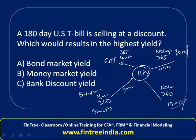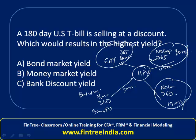We can clearly see that the highest yield is the effective annual yield because it uses compounding. The second highest is bond market yield because it uses 365 days. The third is money market yield, and the lowest is bank discount yield because it takes a higher denominator. So in this case the answer is option A.